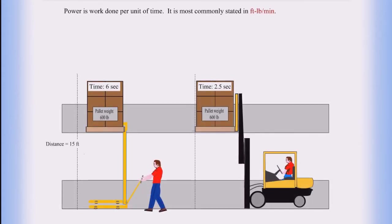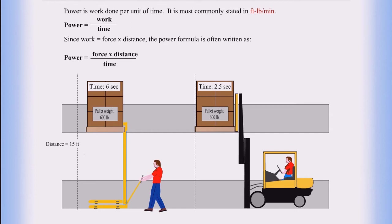Power is work done per unit of time. It is most commonly stated in foot-pounds per minute. Power equals work over time. Since work equals force times distance, the power formula is often written as power equals force times distance divided by time.